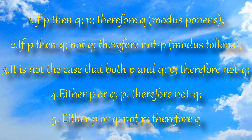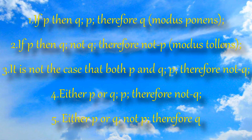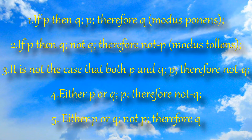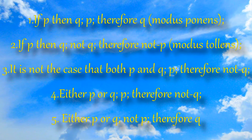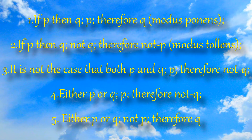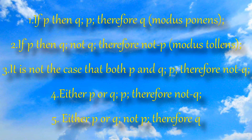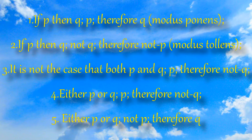2. If P, then Q, not Q, therefore not P — or what we would call modus tollens. 3. It is not the case that both P and Q, P, therefore not Q.